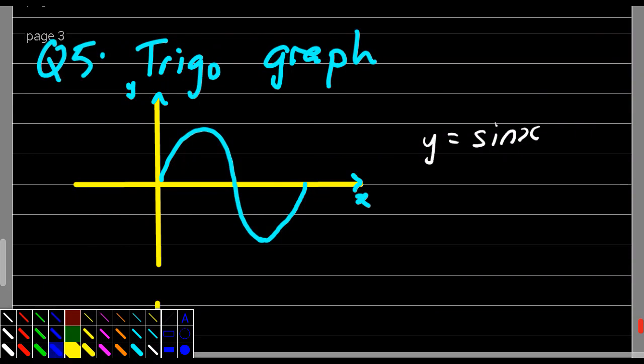Okay, before we do question 5, we have to understand what is a trigo graph and what are the terms they use. So let's go to the first one. The first one says y equals sin x.